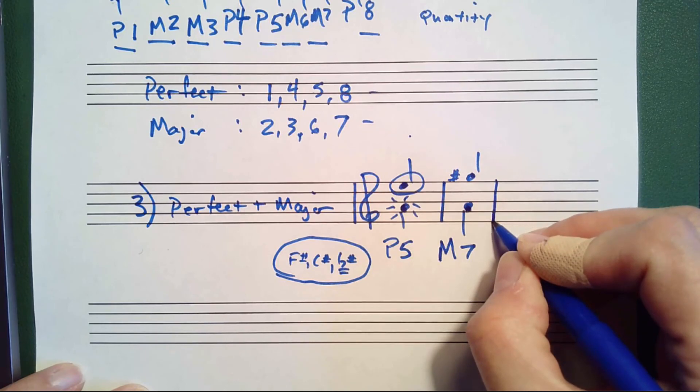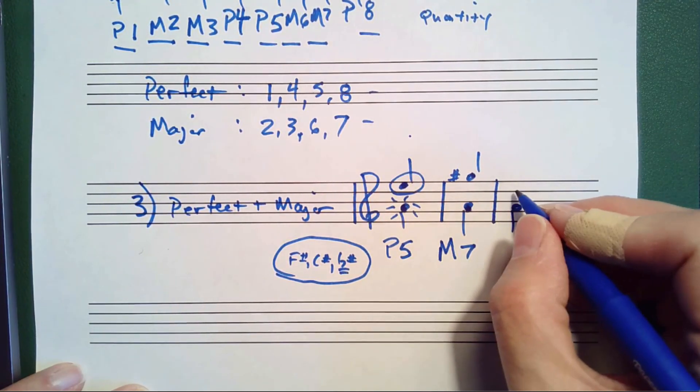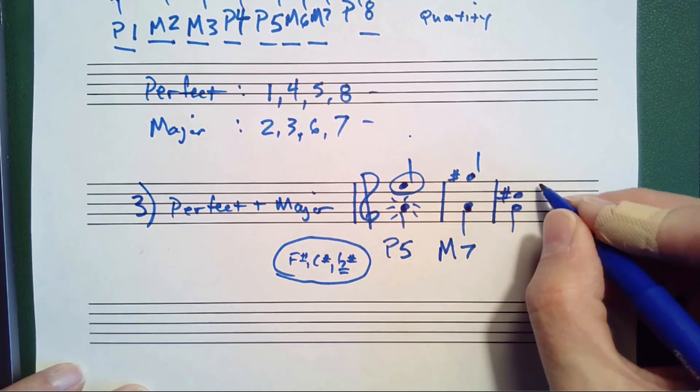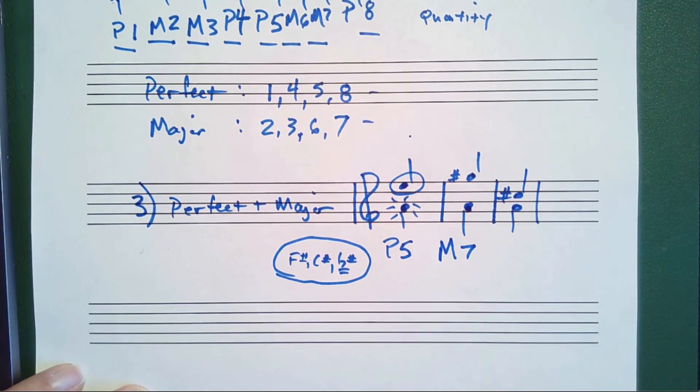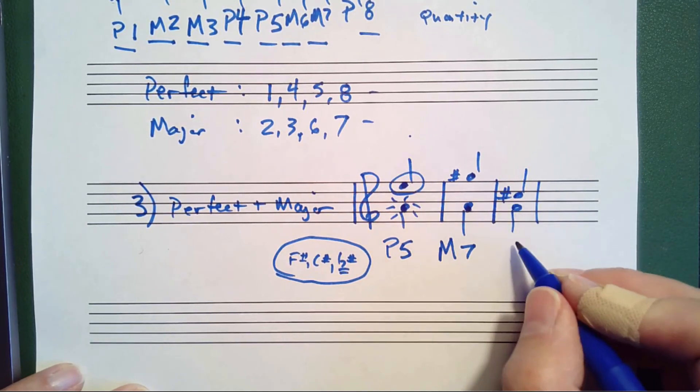Let's do one more identification using this same bottom note. If you saw this interval, you would count A, B, C. This is a third.